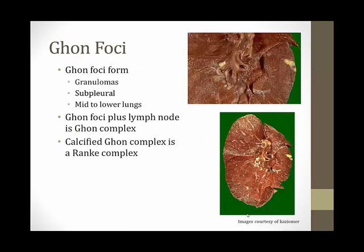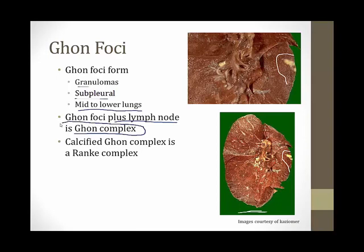Another high-yield TB finding is the Ghon focus — a yellowish lesion in the periphery of the lung, usually subpleural in the mid-to-lower lungs, resulting from granuloma formation. A Ghon focus plus a hilar lymph node together is called a Ghon complex, highly suggestive of tuberculosis. A calcified Ghon complex is called a Ranke complex. These are all results of primary exposure. A Ghon complex usually indicates someone exposed to TB in the latent phase, and full calcification to a Ranke complex means less likelihood of reactivation.